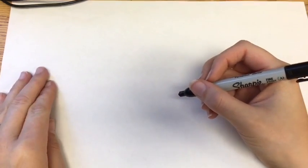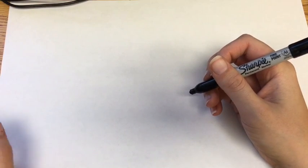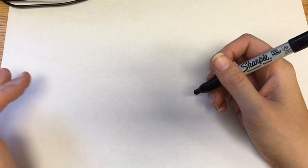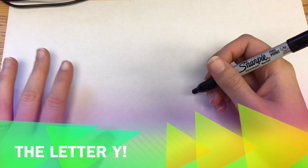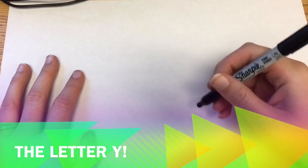All right everyone, in this tutorial we are going to be drawing some winter trees that don't have any leaves on them. So let's get started. When you are drawing a tree that has no leaves on it, it's basically just the letter Y.